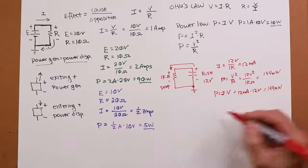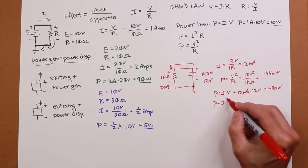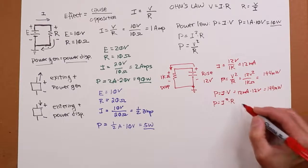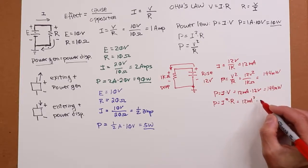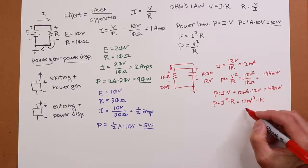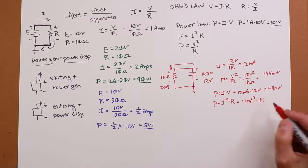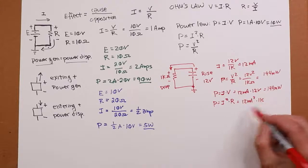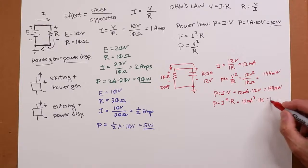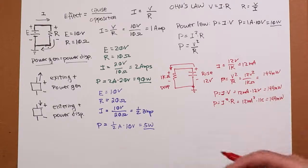And lastly, you could do I squared times R. So I squared is 12 milliamps, R is a k ohm. So that's going to get you 144 micro squared amps. You take the micro times the k and you're back to millis, and you got your 144 milliwatts again.